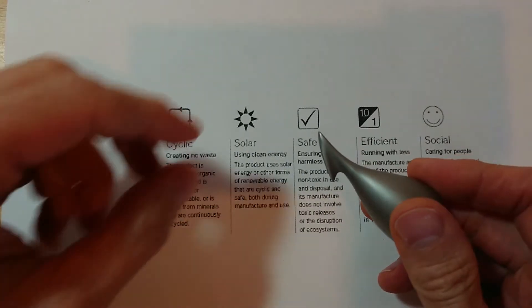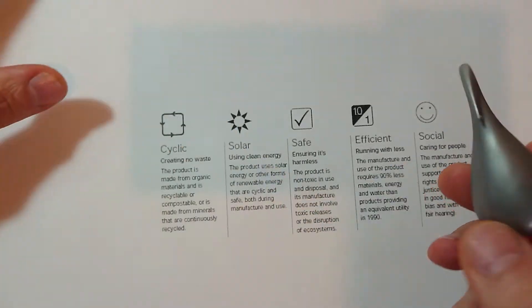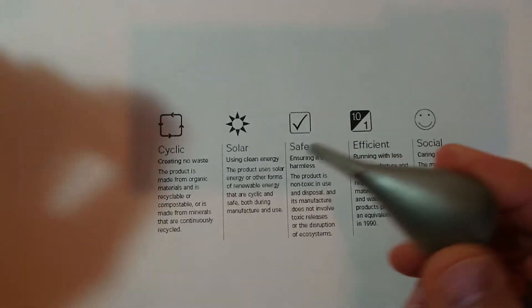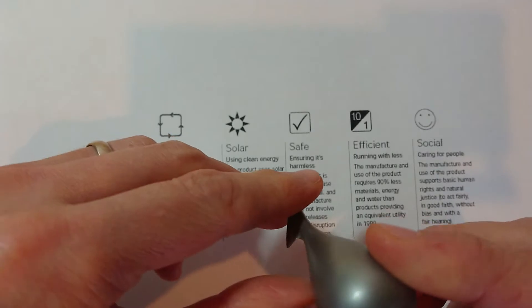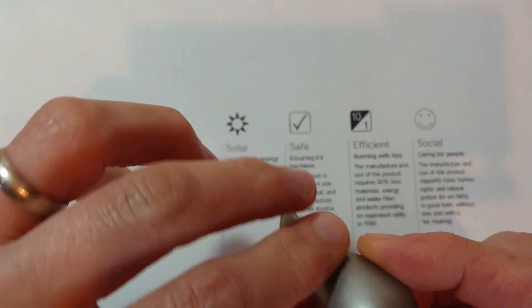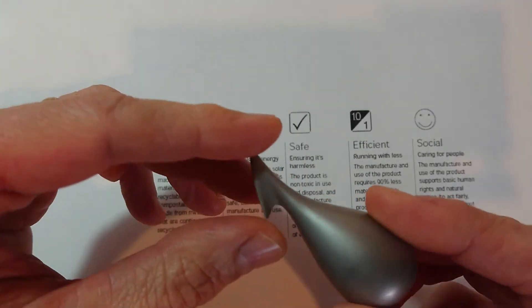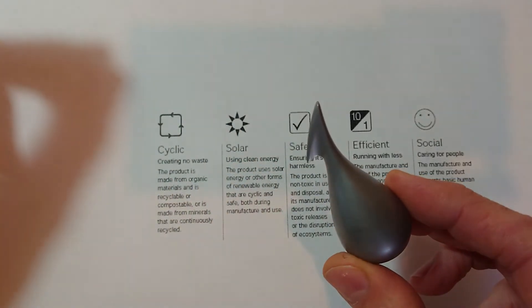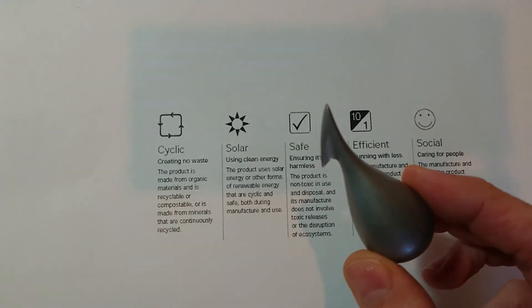First of all, cycling, creating no waste. This product here is obviously one material. It will obviously be very easy to recycle if you were to use that again. That's a good thing. It'll be easy enough to get the coating off. I think that's quite a good product for recycling, quite good from a cycling point of view.